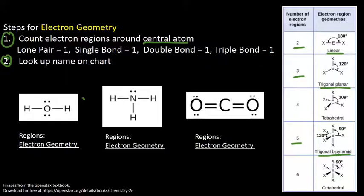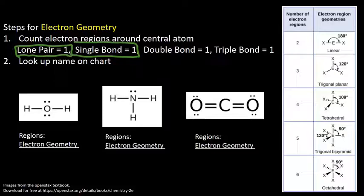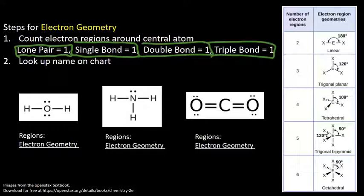How do we count the regions? A region means an area where there are electrons hanging out. A lone pair counts as one region. A single bond also counts as one region. Here's where people get tripped up — they think a double bond might be two regions. The trick is, in a double bond, those electrons are all hanging out together and can't freely distribute around the molecule, so a double bond still counts as just one region. What drives all these shapes is the repulsion between electrons around the central atom, and those electrons in a double bond stay together, driving them to the same shape as a single bond. The same applies to triple bonds — it also counts as just one region. So every region around the central atom counts as one, whether it's a lone pair, a single bond, a double bond, or a triple bond. Then we look up the name.